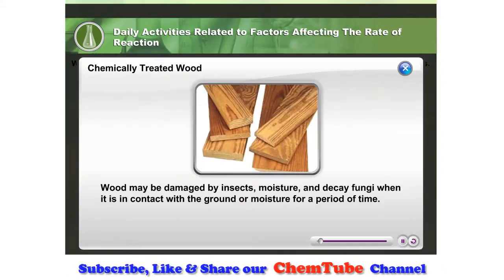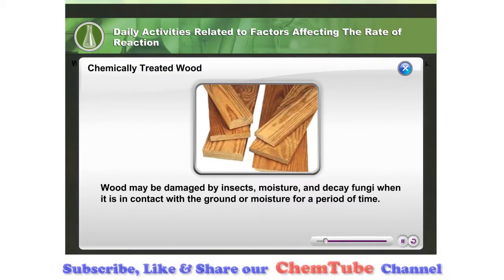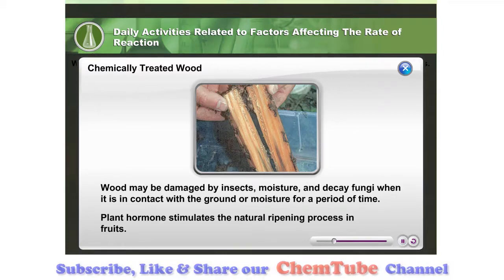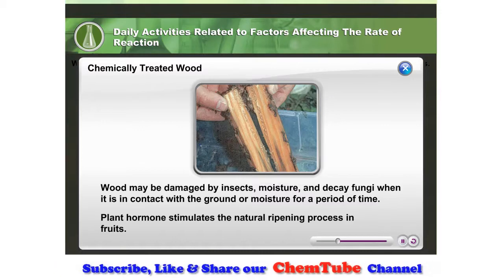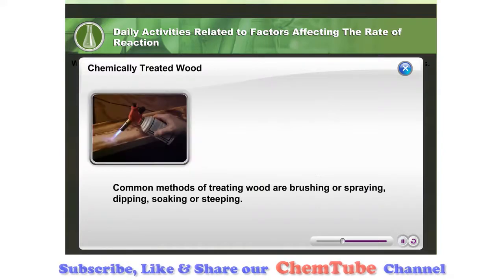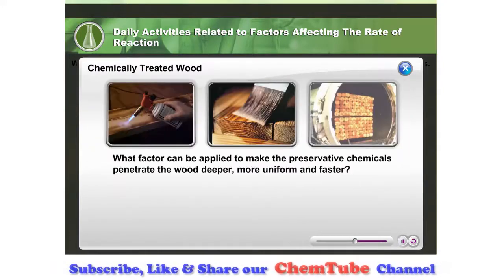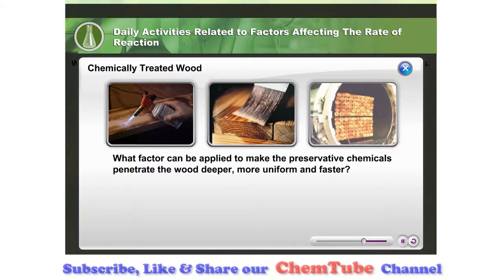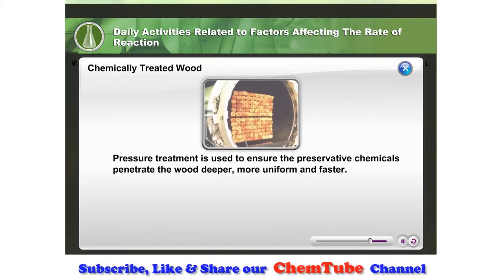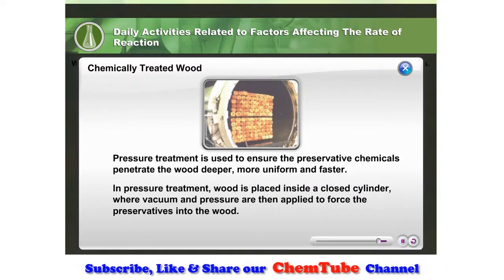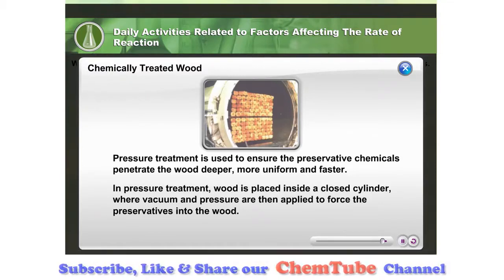Wood is a commonly used building material. However, when it is in contact with the ground or moisture for a period of time, it will be damaged by insects, moisture, and decay fungi. In the industry, wood is chemically treated to increase durability and resistance from being destroyed by insects or fungus. Common methods of treating wood include brushing or spraying, dipping, and soaking or steeping. However, these methods do not ensure deep and uniform penetration of the preservative chemicals into the wood. Pressure treatment is used to force the preservative chemicals to penetrate the wood deeper, more uniformly, and faster by placing wood inside a closed cylinder where vacuum and pressure are applied.